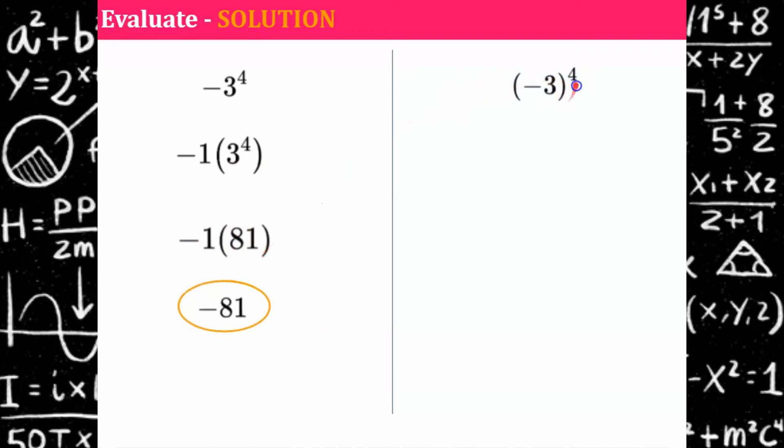Now let's check this one. This one, our base is negative three. So that means we're multiplying negative three by itself repeatedly four times. And remember, negative three times negative three is positive nine. Another positive nine and nine times nine is 81. So here our answer is positive 81 and here our answer is negative 81. So be mindful of looking for these parentheses. Try this one. Go ahead and pause and come back when you're ready.